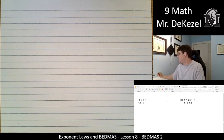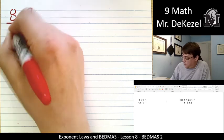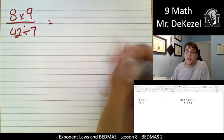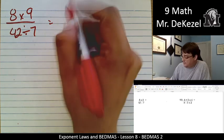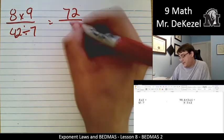All these next ones are easier for you. All right. We've got 8 times 9 over 42 divided by 7. We're going to treat the top and the bottom completely separately. 8 times 9 is 72. And 42 divided by 7 is 6.